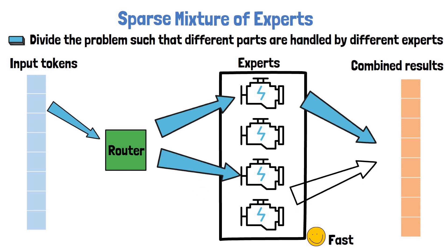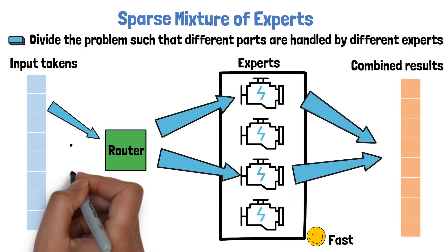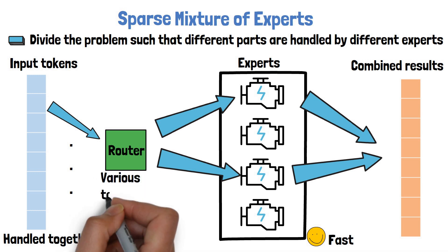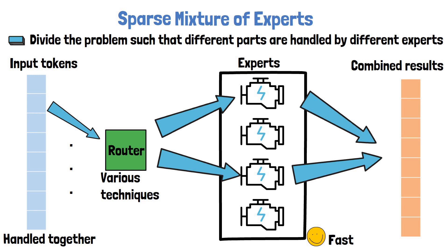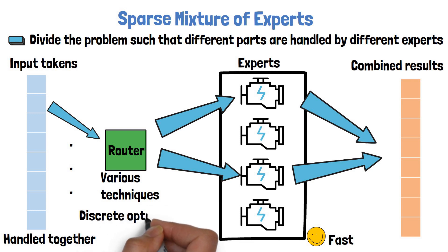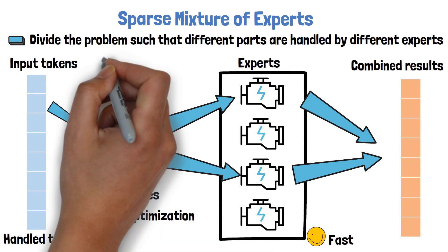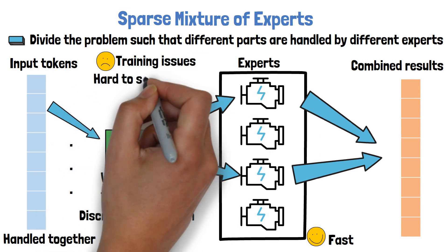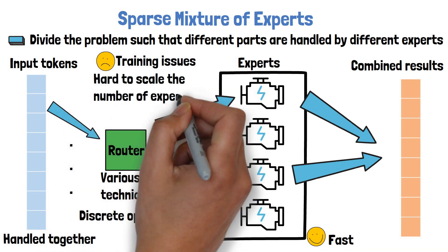It goes on for each input token. Of course the tokens are handled together and we do not do this one after the other as shown in this example. There are various techniques to implement the routing logic, but it is important to say that since we choose specific tokens to pass, it requires solving a discrete optimization problem, which is hard, and this is causing issues with training and makes it hard to scale up the number of experts.